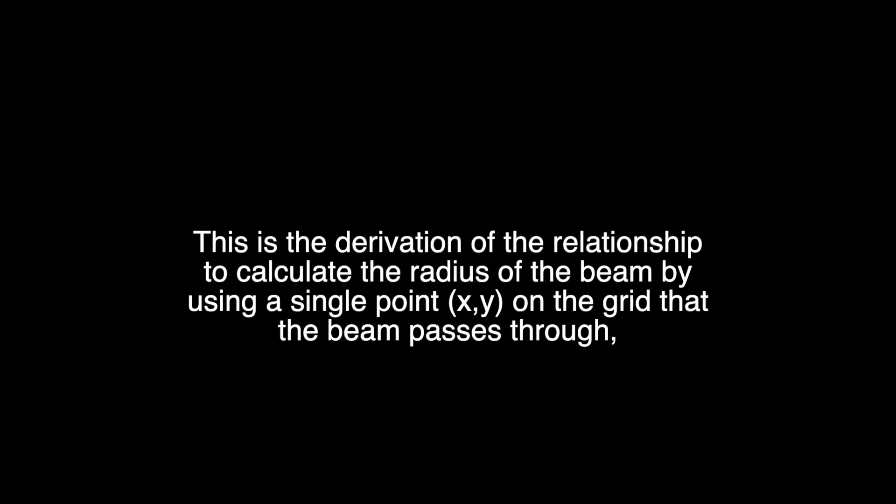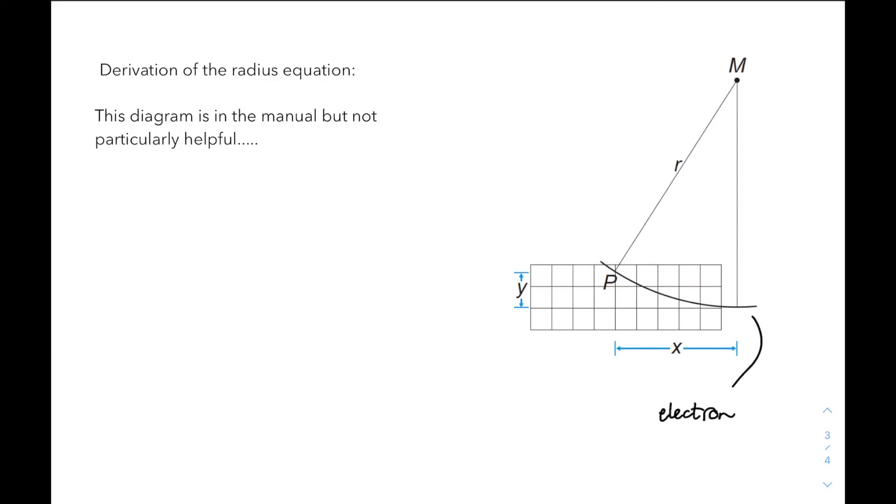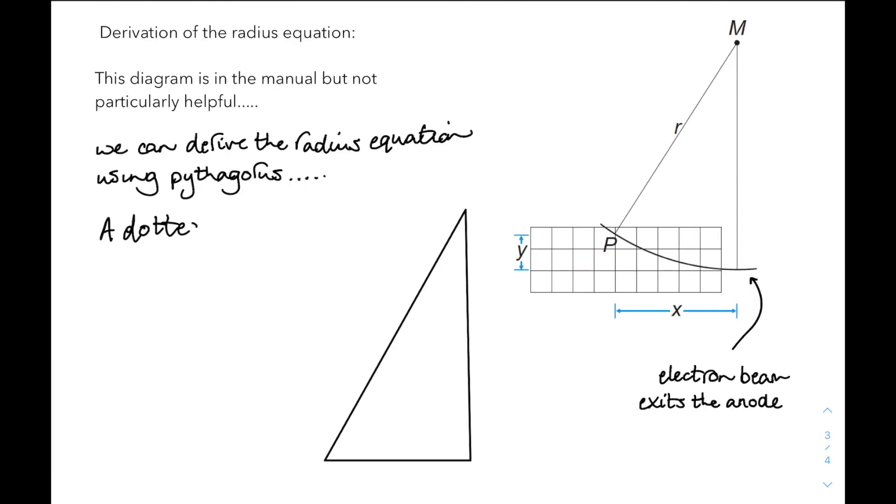Right, this last wee bit is the derivation of the relationship to calculate the radius of your electron beam from a single point on the grid. The manual's not that helpful. It gives us this wee diagram which shows the electron beam exiting the anode and its curved path. Now we can derive the radius equation just using a wee bit of Pythagoras. If I draw a red dotted line on the diagram, that gives us a right-angled triangle.